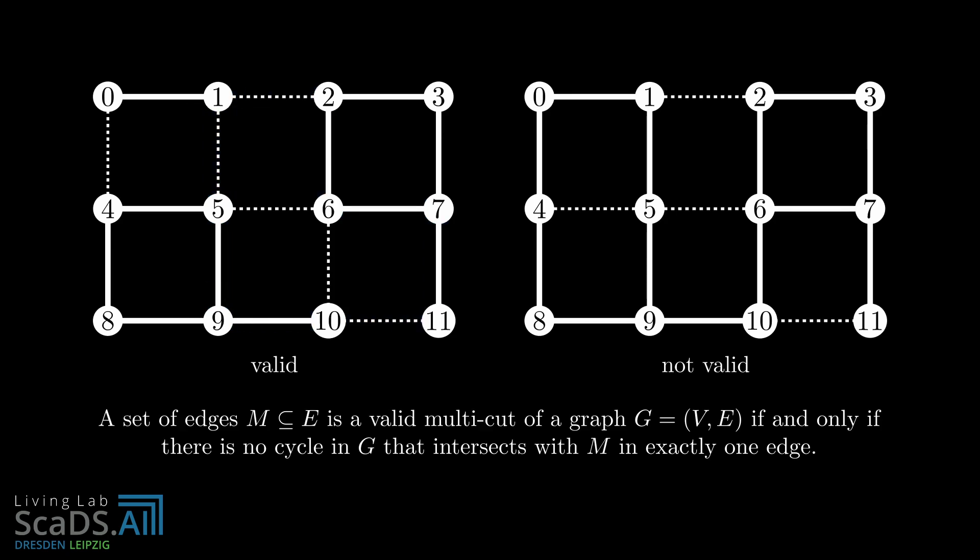The example on the right does not satisfy our condition. For example, there is exactly one cut edge in this cycle which is not allowed. The same goes for this cycle.